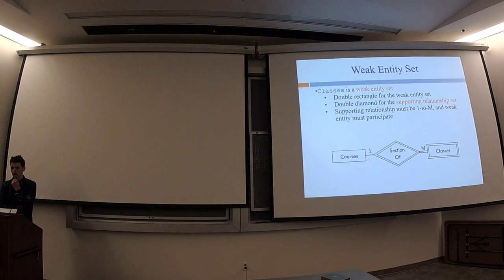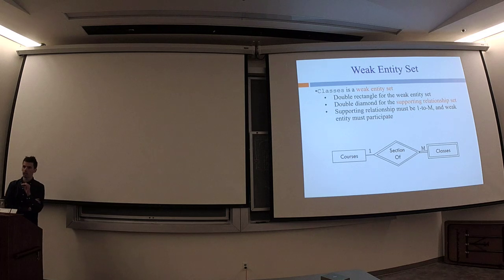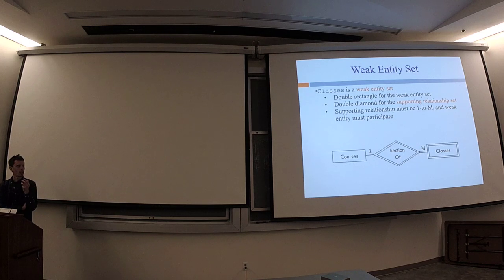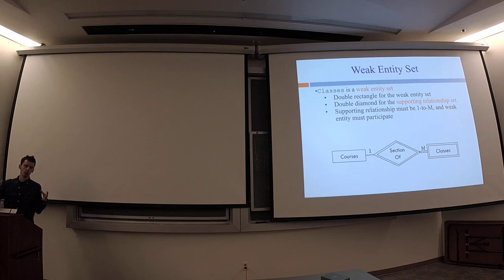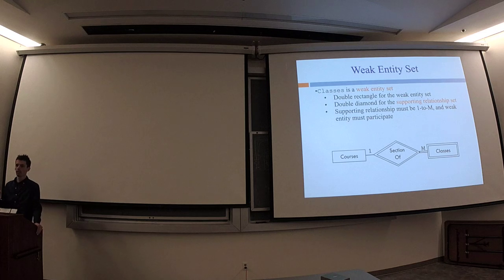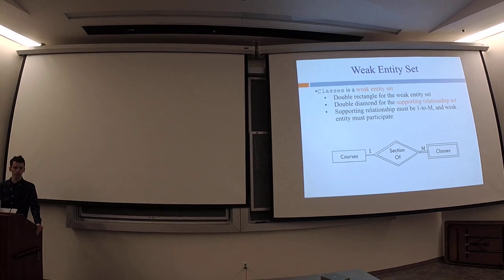Furthermore, the relationship has to be one-to-many, and the weak entity set has to participate — you need double lines on the weak side. The strong entity set does not need to participate; it can, but it doesn't need to. If it were one-to-one, once you start translating into tables it would make more sense to just put the attributes into the other entity set rather than allowing multiple. You can also have a weak entity set supported by multiple strong entity sets — a ternary relationship can be a supporting relationship as well.